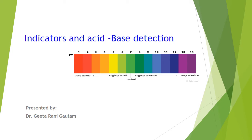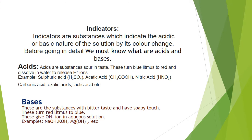Welcome friends to the science class. Today we are covering a new topic: indicators and their use for acid-base identification. We must first know about acids and bases, and then we can understand what indicators are. Indicators are substances which indicate the acidic or basic nature of a solution by changing color.